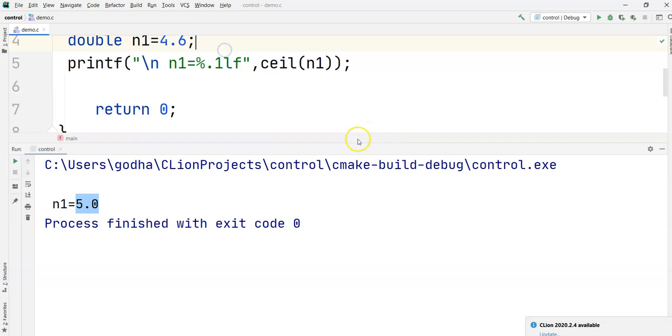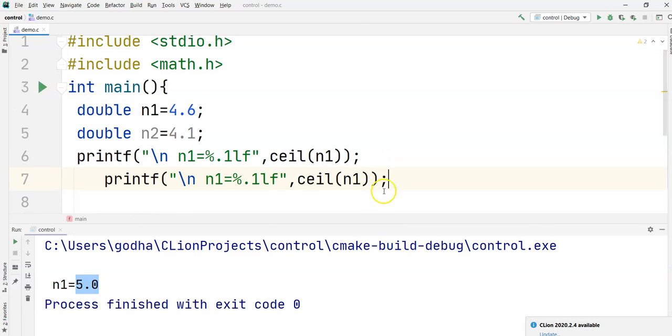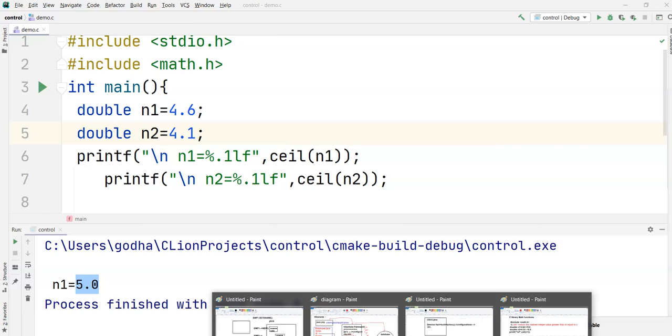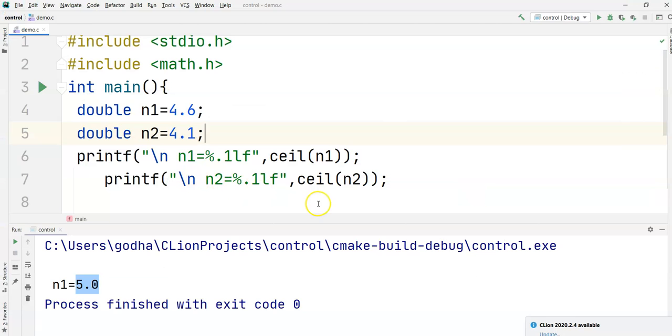And imagine I am just taking another example here. Double n2 is equal to 4.1. So if I just copy and print it again, n2 is equal to ceil of n2. We should expect 4.0, but however, the ceil function returns the nearest integer value that should be greater than x. So it should return anything after 4.1, which is 5.0.